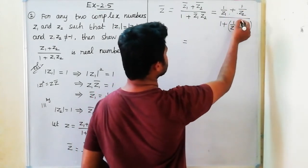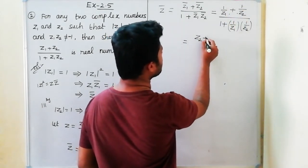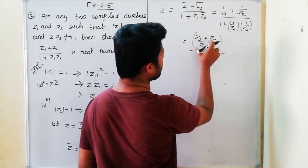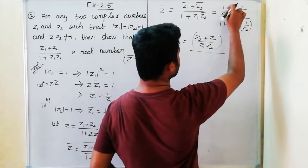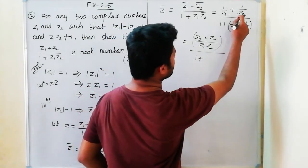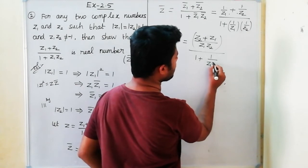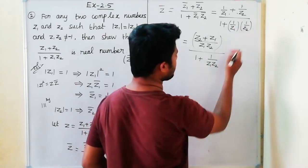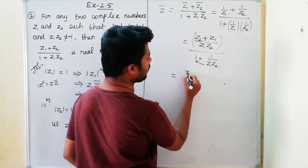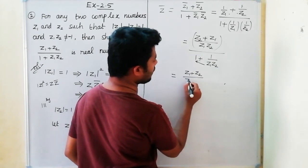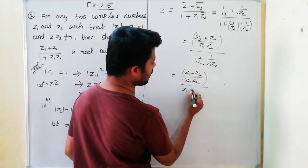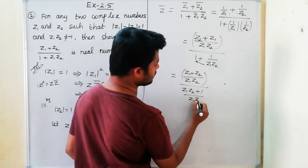Now do cross multiplication. The numerator 1/z1 plus 1/z2 gives (z2 plus z1) divided by z1·z2. The denominator 1 plus 1/(z1·z2) gives (z1·z2 plus 1) divided by z1·z2. So the expression becomes (z1 plus z2)/(z1·z2) divided by (1 plus z1·z2)/(z1·z2).